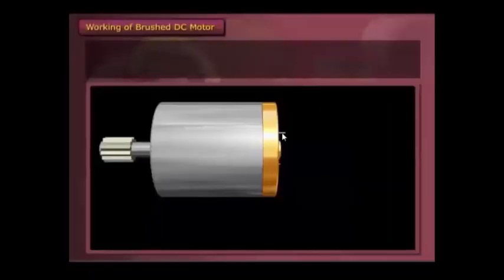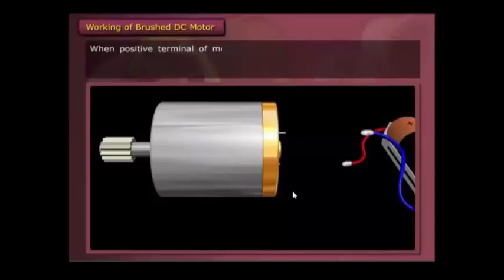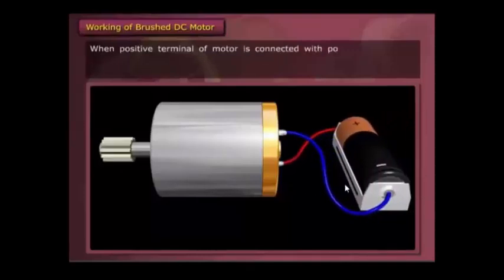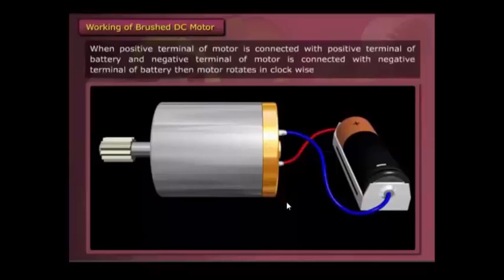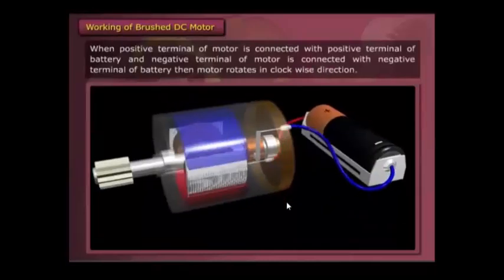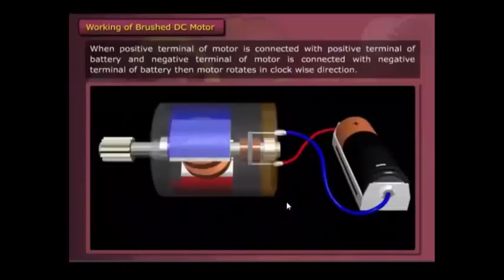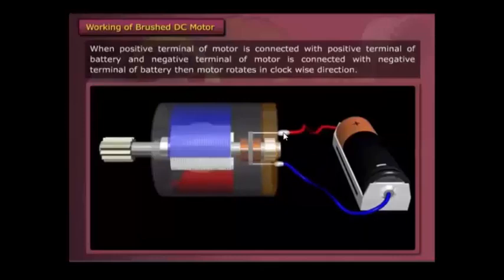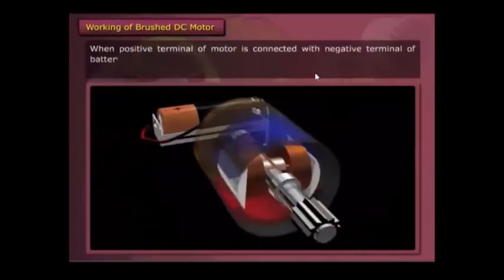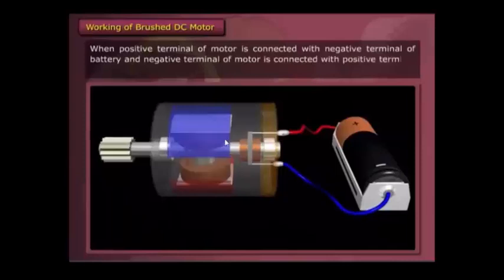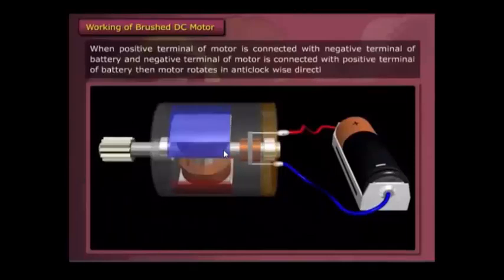When the positive terminal of the motor is connected to the positive terminal of the battery, and the negative terminal of the motor is connected to the negative terminal of the battery, the motor rotates in the clockwise direction. When we interchange the connections — the positive terminal of the motor connected to the negative terminal of the battery, and the negative terminal of the motor connected to the positive terminal of the battery — the motor rotates in the anticlockwise direction.